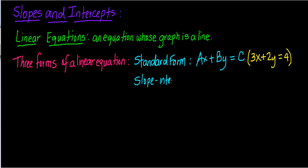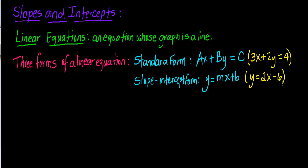Another form of linear equations is slope-intercept form, which looks like Y equals MX plus B. An example would be Y equals 2X minus 6. It's called slope-intercept form because it's easy to see the slope and the intercept. The third form of a linear equation is point-slope form.